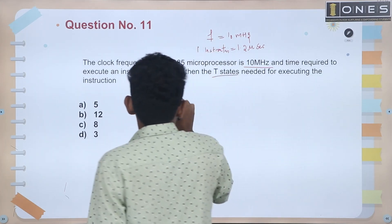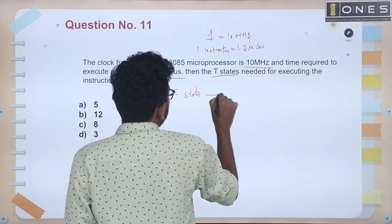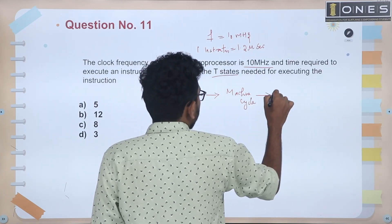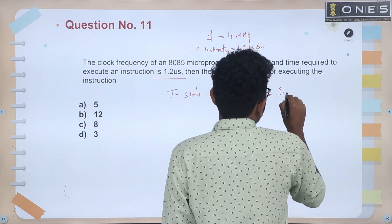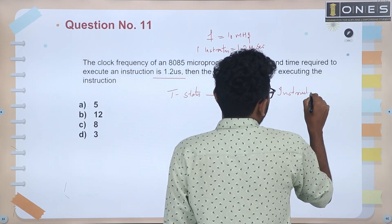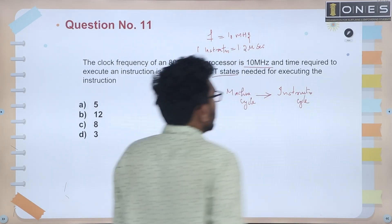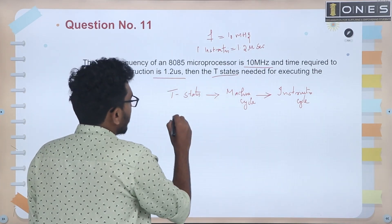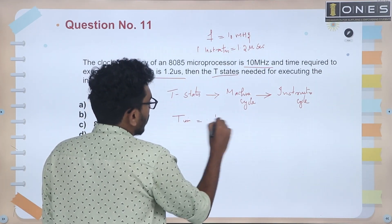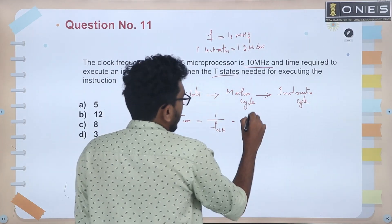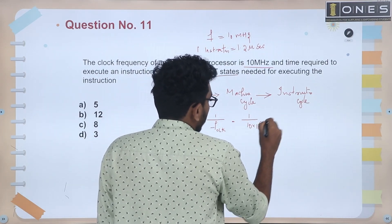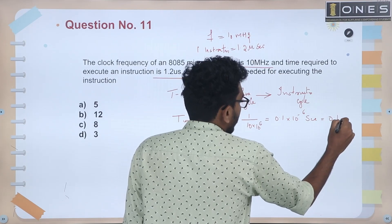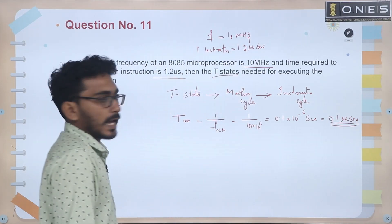Normally, the T-states combined take 1.2 microseconds. So what is the machine cycle? The clock period is 1 divided by 10 megahertz, which equals 0.1 microseconds.